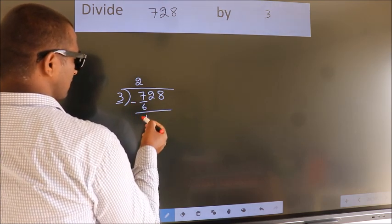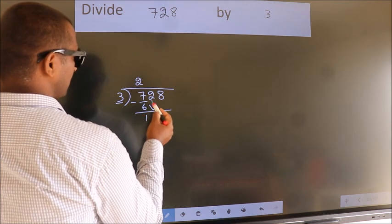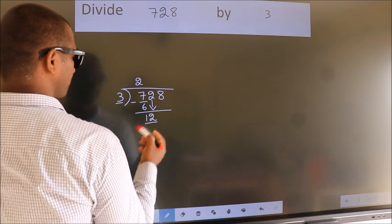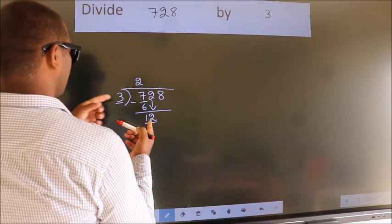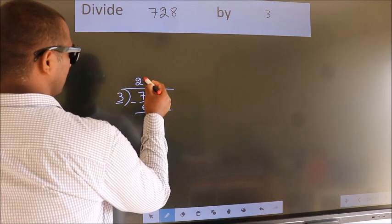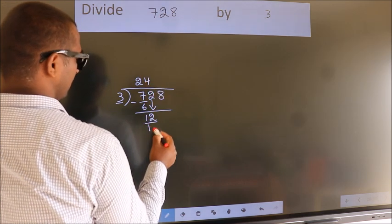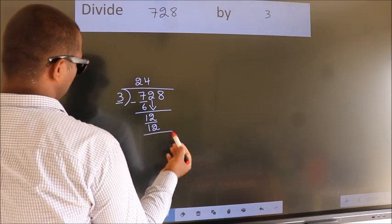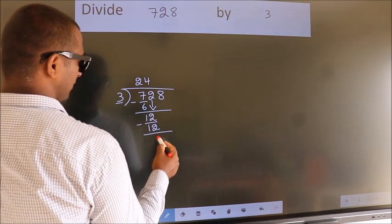After this, bring down the beside number. So, 2 down. So, 12. When do we get 12? In 3 table, 3 fourths, 12. Now, we subtract. We get 0.